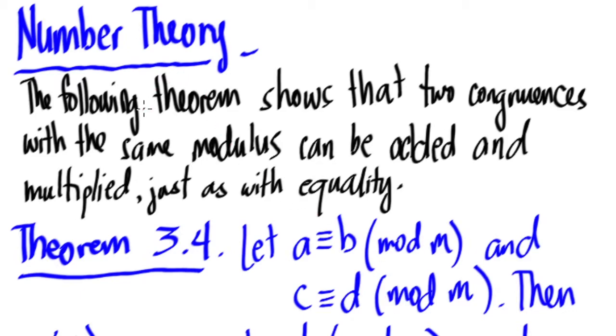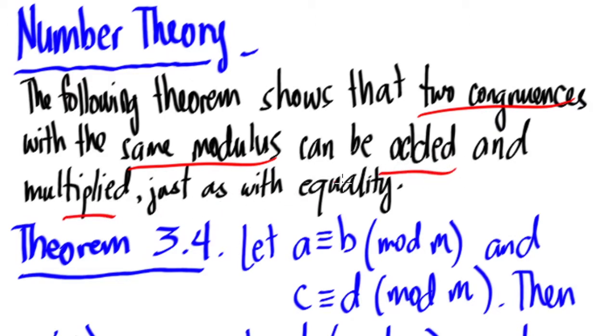The following theorem shows that two congruences with the same modulus — take note — can be added and multiplied, just as with equality.